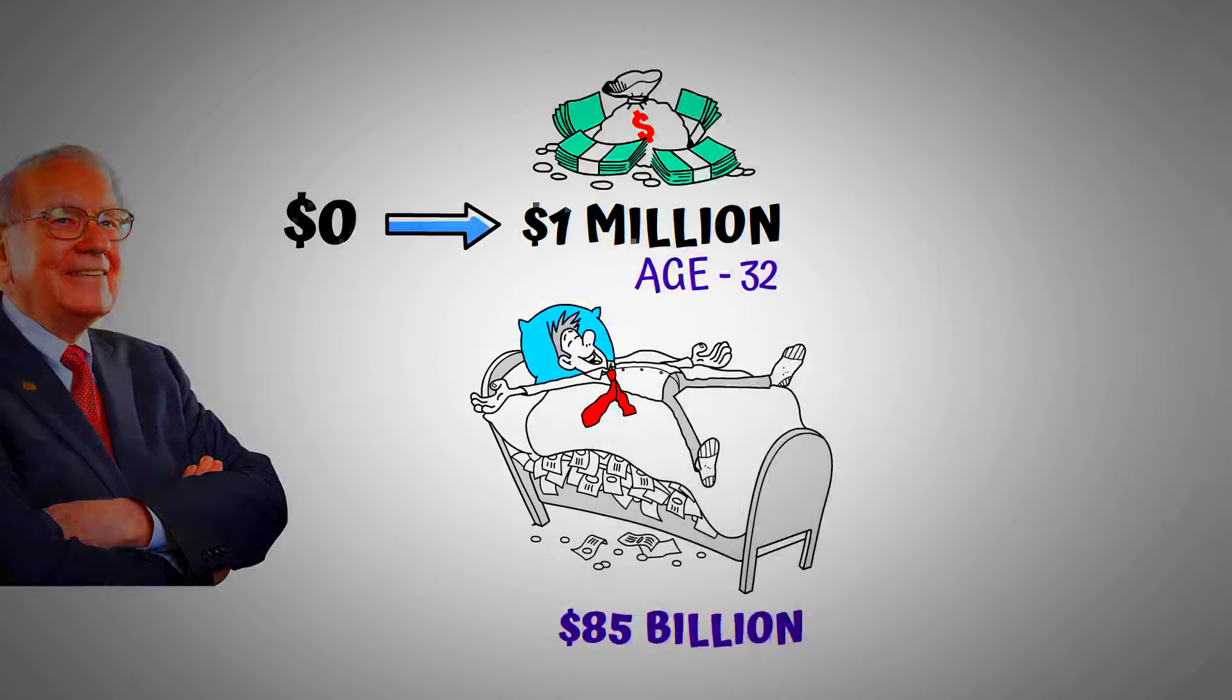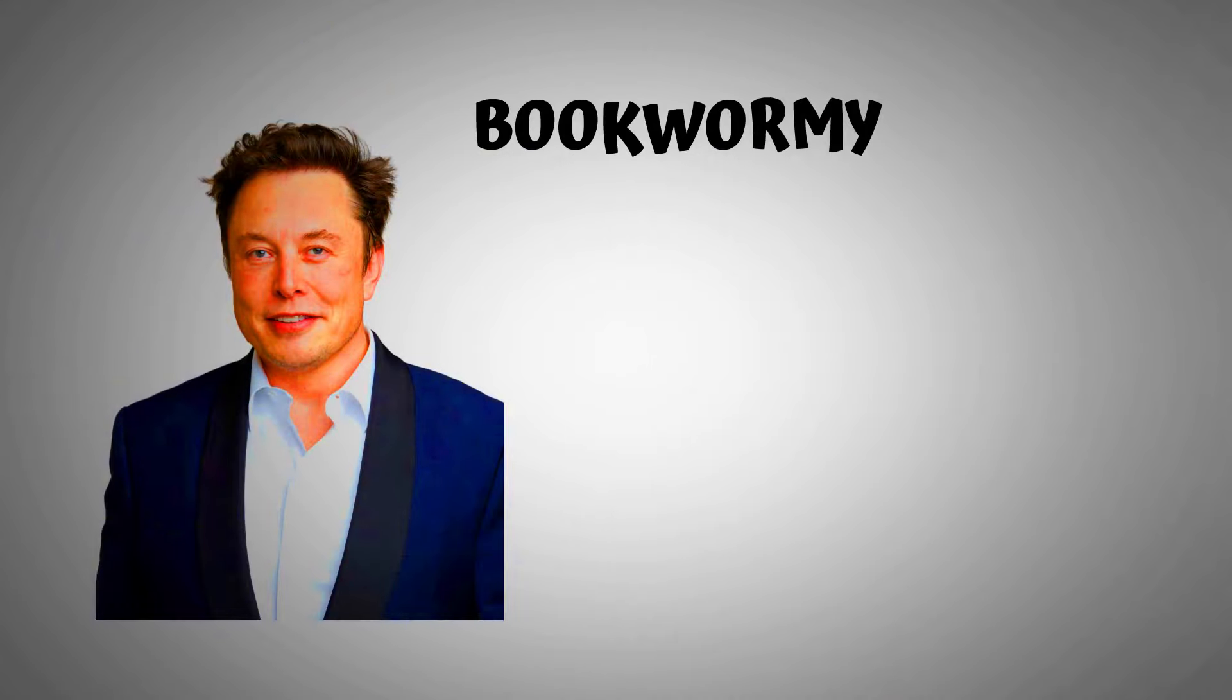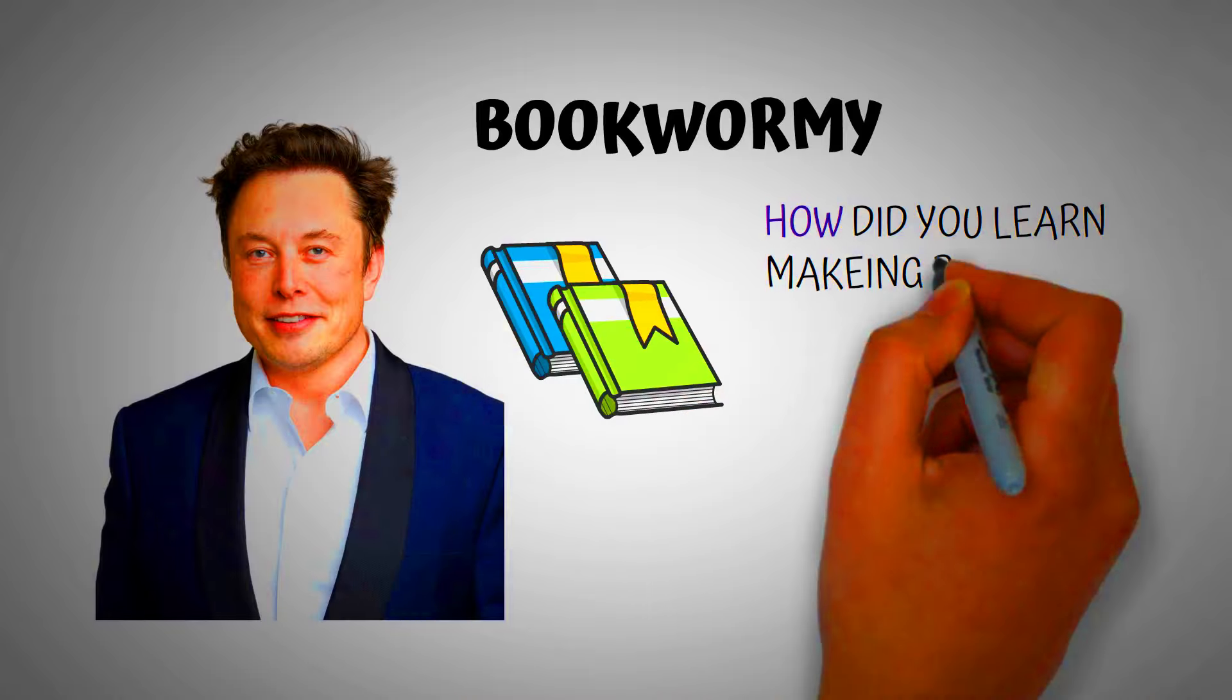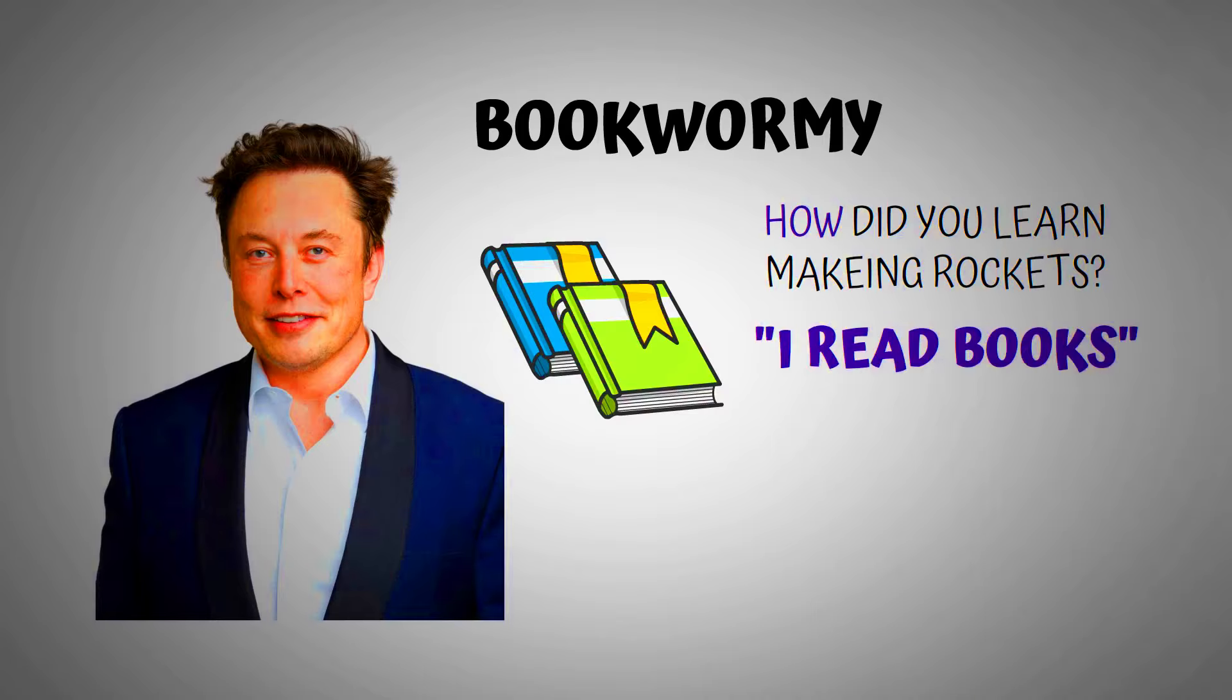In an interview, Elon Musk called himself a bookwormy child. When he grew up, he used to read up to two books a day. When asked how he learned to make rockets, Musk's simple answer was, I read books.